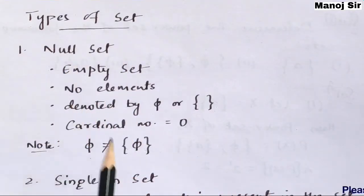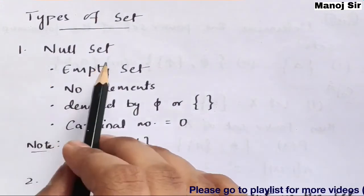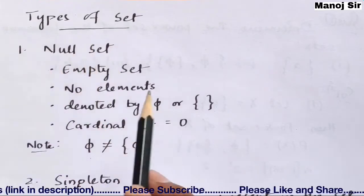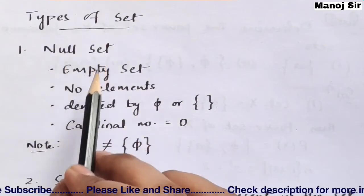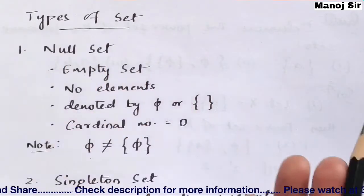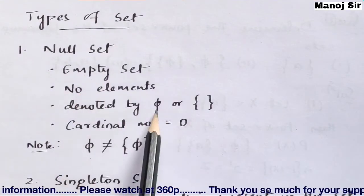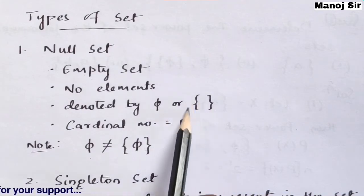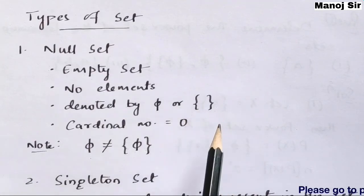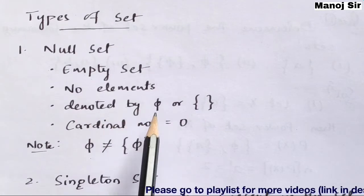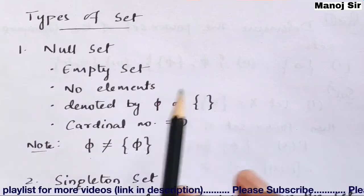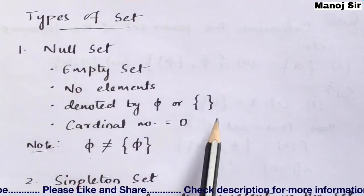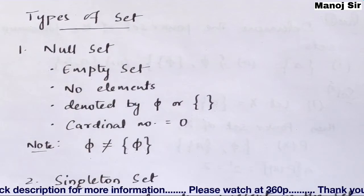Let us start with this topic: types of sets. The first type is the null set. Null set means there is no element present in that set. This null set is also referred to as empty set, because there is no element present in it. It is denoted either by phi or by empty curly brackets. If there is nothing written between the brackets, it is referred to as a null set.